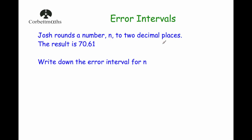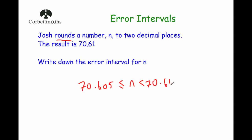Our next example: Josh rounds the number n to two decimal places, and his answer is 70.61. Write down an error interval for n. I'll do this one without drawing the number line. In terms of the lowest possible number that would round up to 70.61 to two decimal places, that's going to be 70.605, because anything below that would round down to 70.60. But 70.605 would round up to 70.61, and that would be the lowest possible number. In terms of the highest possible number, it would be any number up to but not including 70.615, because any number up to that but not including it would round down to 70.61 to two decimal places.